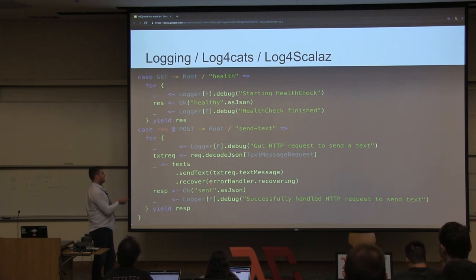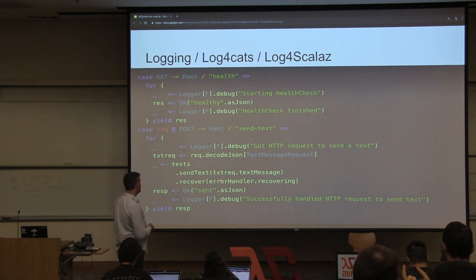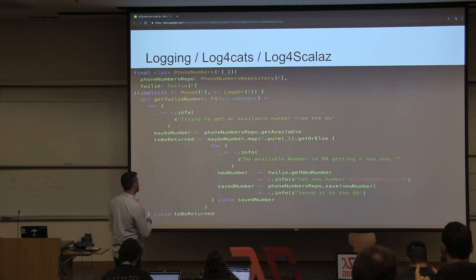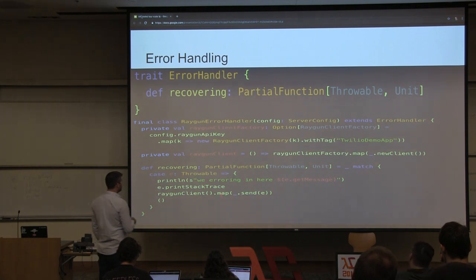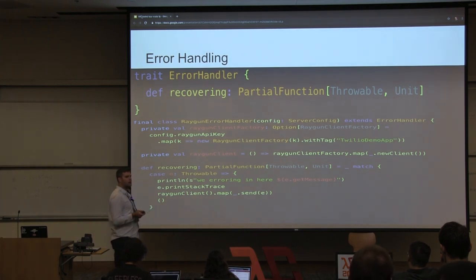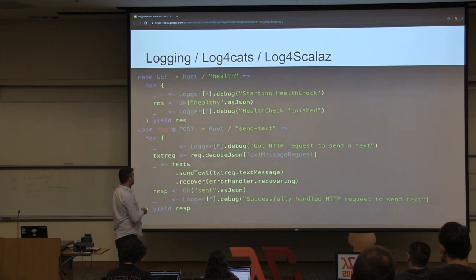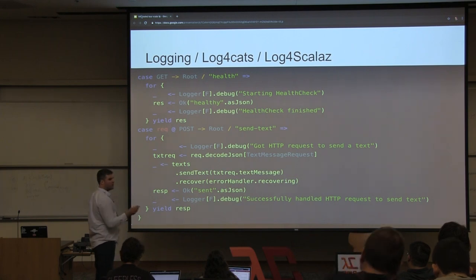Someone noted that recover might not be the best choice here because we might not have sent a text message but are still returning OK. There is another method — recoverWith — that lets you change the subsequent program, so I could return a bad request instead. As far as I know, what I'm passing into recover is going to happen inside the context of a ZIO — recovering returns an IO of a thing, so what I'm passing in happens inside that context eventually. But if I'm wrong, please let me know.